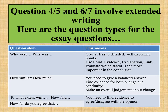In the next part of the exam, you'll do either question 4 or 5, or question 6 or 7. Both involve extended writing — essay questions. The question stem might say 'why were' or 'why was', for example 'why was smuggling a difficult crime to stop?' For a why question, give at least three detailed, well-explained points using the PEE concept — Point, Evidence, Explanation. In your conclusion, evaluate which factor is the most important.